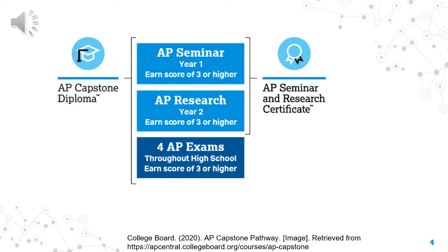Let's look at the sequence of courses and the things you can achieve if you take all of them. All sophomores are required to take AP Seminar, which is the year one course. It has three performance tasks, one of those being an end-of-course exam. The second year is optional and is a selective course, which is AP Research, which requires you to conduct independent research and develop a paper and presentation. Successful completion — meaning three or higher in AP Seminar and AP Research — can earn you the AP Capstone Certificate.